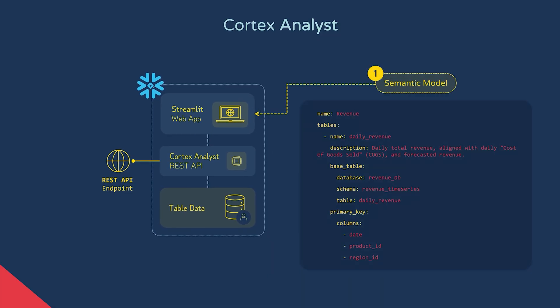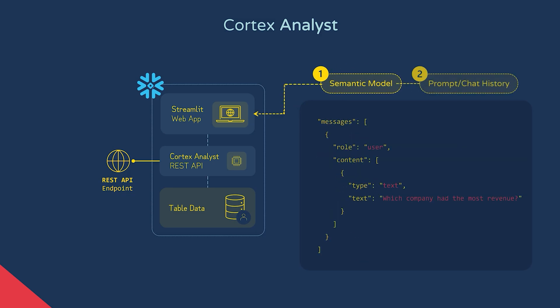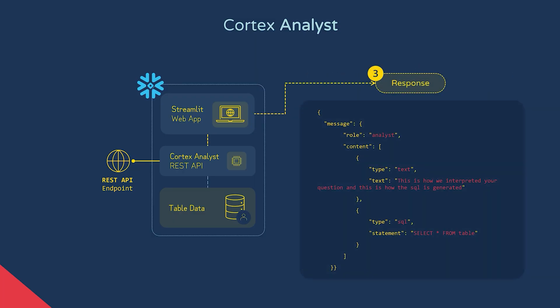In the Streamlit application code, you call the Cortex Analyst REST API via the Get Analyst Response function and provide two bits of information. One is the semantic model — a YAML document detailing tables, columns, and other elements that bridges the gap between the data definition in Snowflake metadata and how a business user might phrase what they need. The second is the prompt or chat history — what the user wants to know. The API will return JSON containing the response and the SQL used to generate it, which can then be shown in the Streamlit app. That's it for a quick introduction into all the Cortex features.